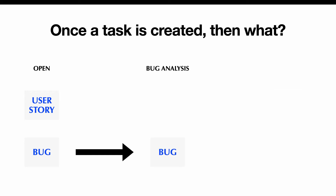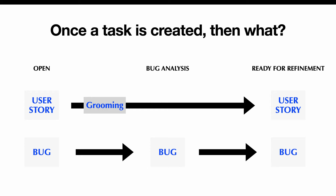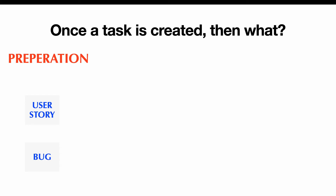For bugs, generally a bug would be moved into bug analysis first. The QA team will take a look at the bug, just verify that it is indeed a bug, and if it is they move it into ready for refinement. Comparing the two flows, they're similar but there's an extra step for bug tasks. Once all that task preparation work is done, the tasks are in the ready for refinement stage.